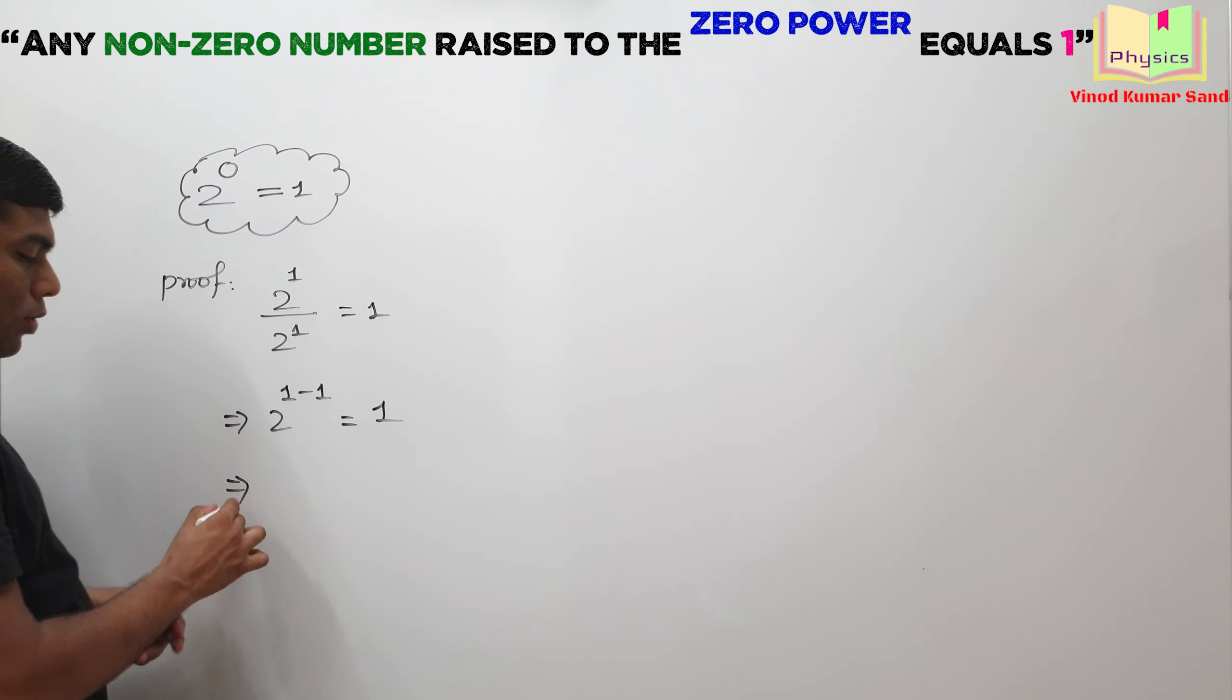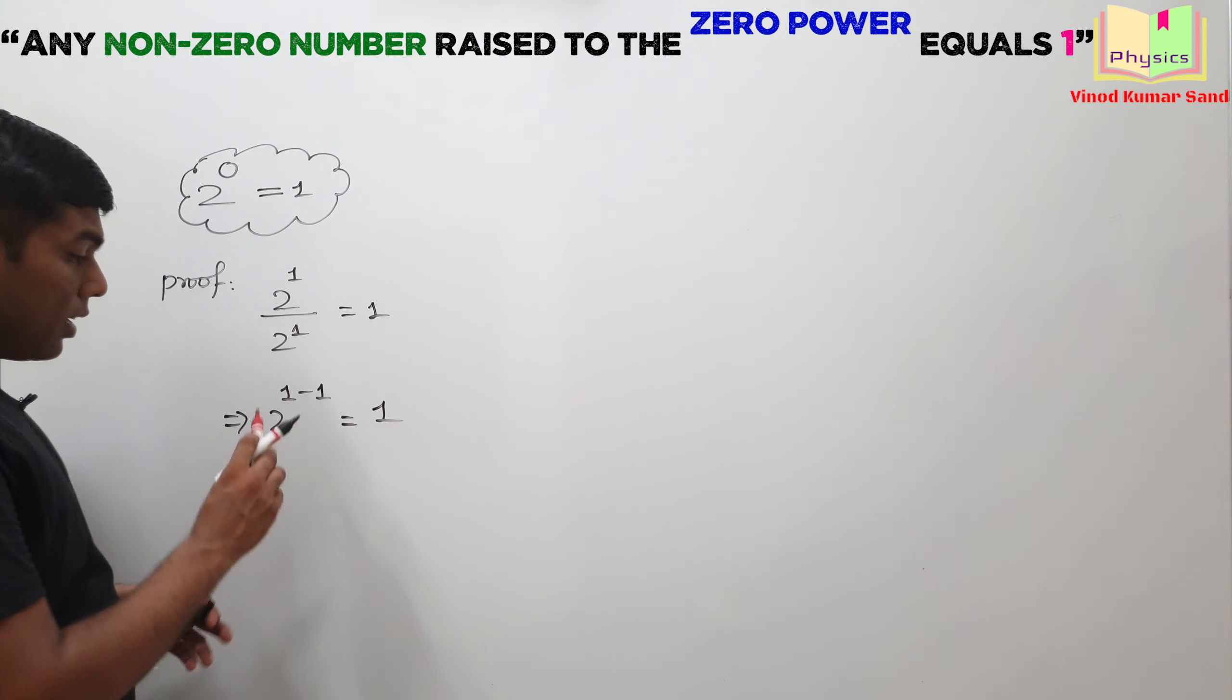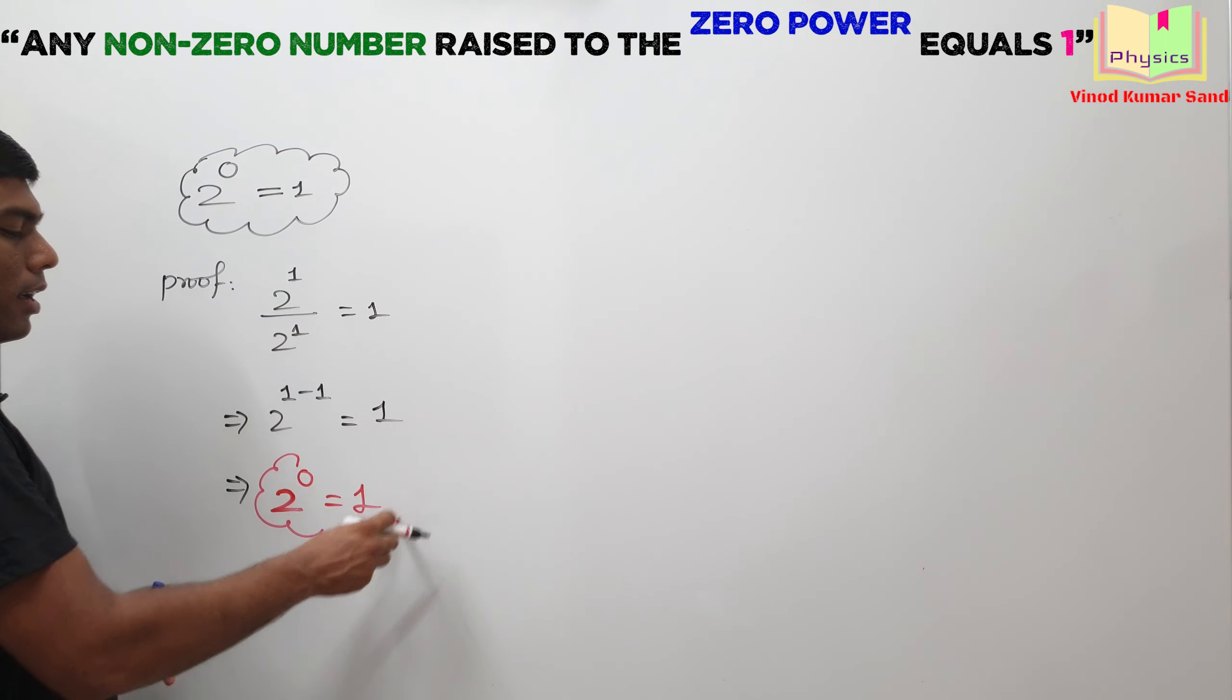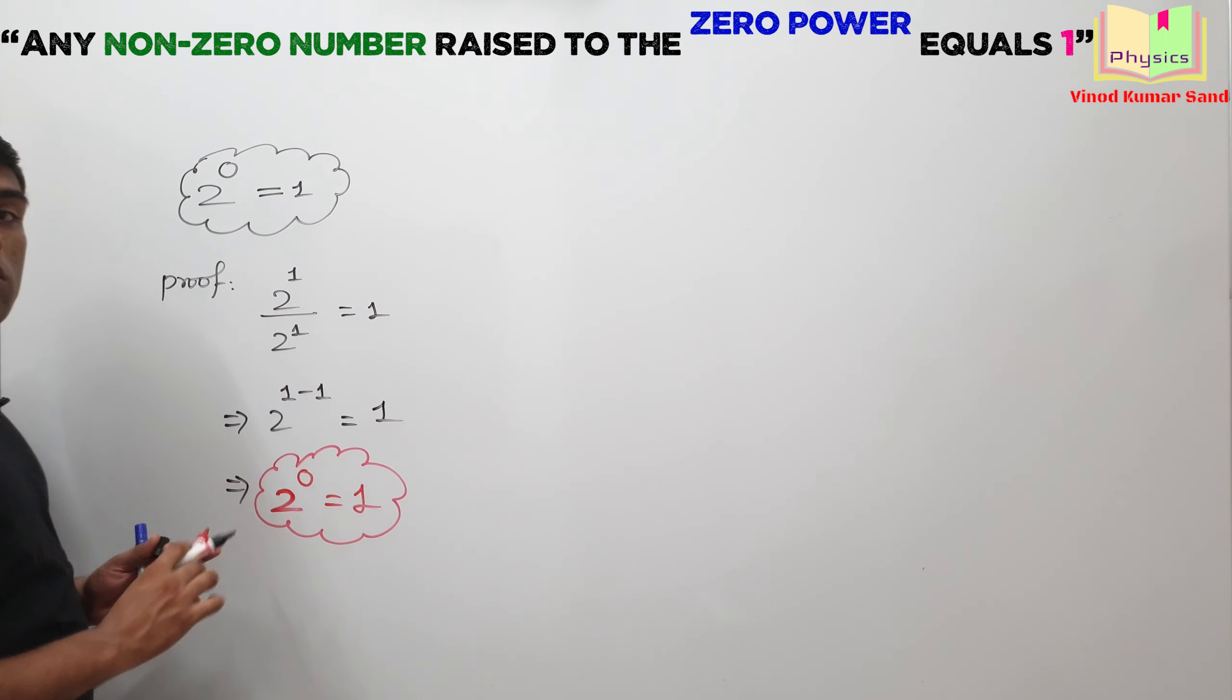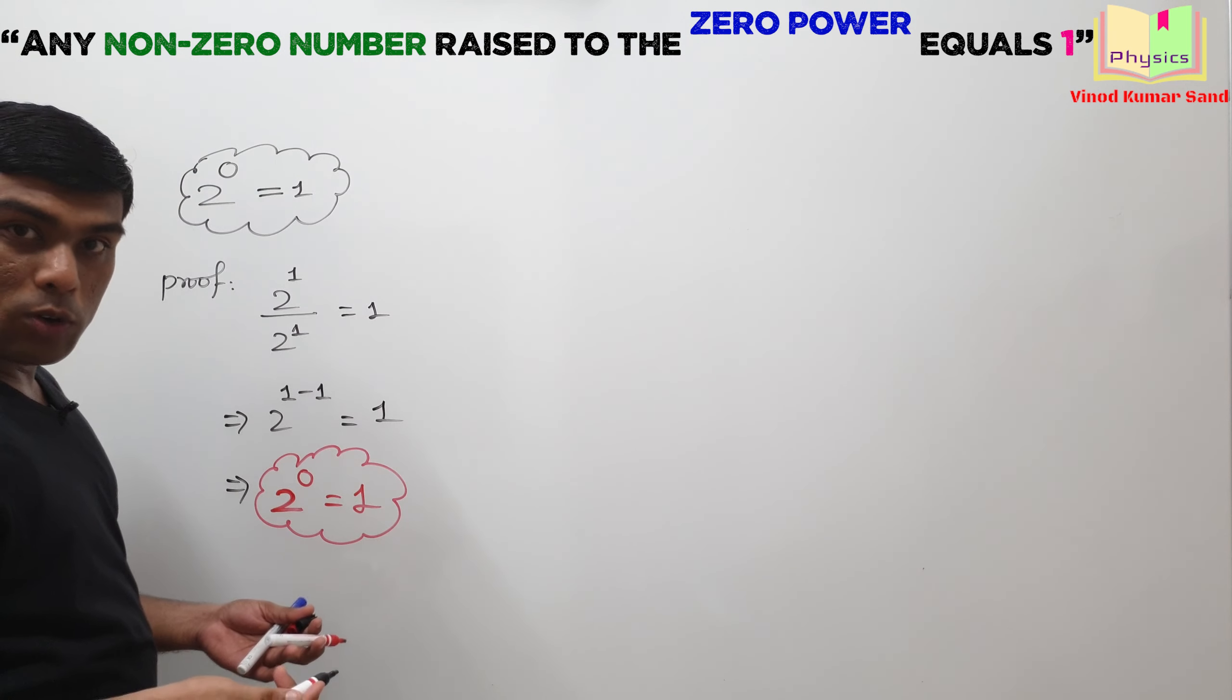Here in LHS we are left with what? 2 to power 0. So, 2 to power 0 is actually equal to 1. Now, this is true for any non-zero number.